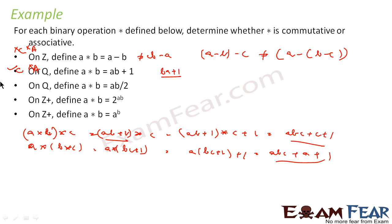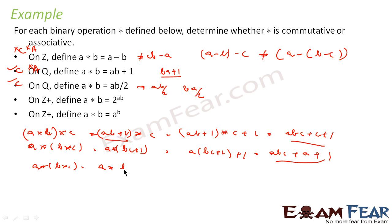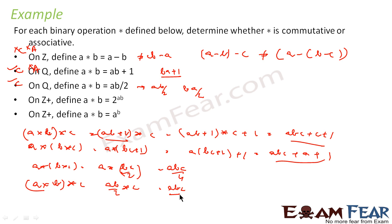For a * b = ab/2 on Q: ab/2 = ba/2, so it is commutative. For associativity, a * (b * c) = a * (bc/2) = a(bc/2)/2 = abc/4. And (a * b) * c = (ab/2) * c = (ab/2)c/2 = abc/4. Both are the same, so it is associative also.